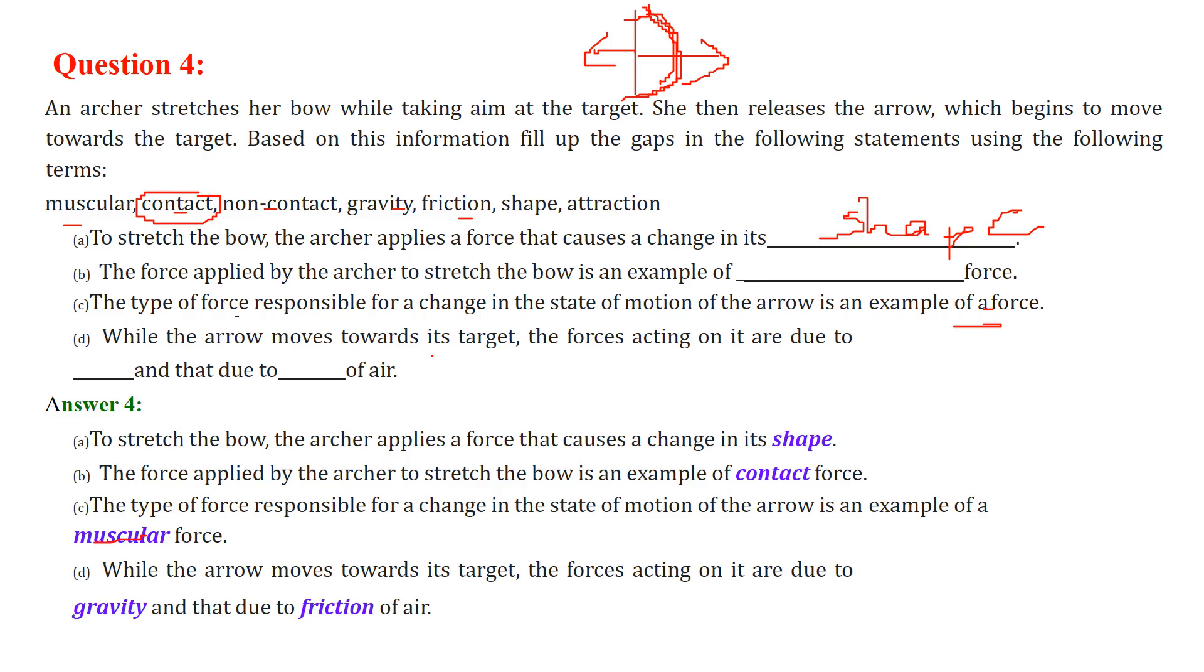While the arrow moves towards the target, the forces acting on it are due to gravity. First of all, if the arrow is moving like this, gravity affects it and also the friction of the air because it is moving in the medium which is air.